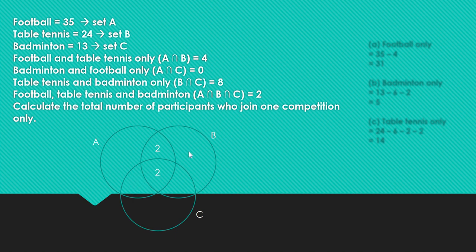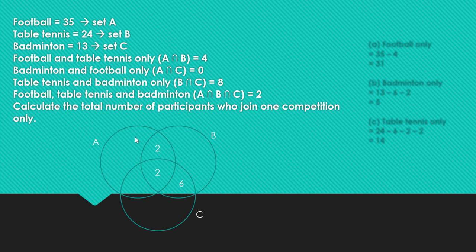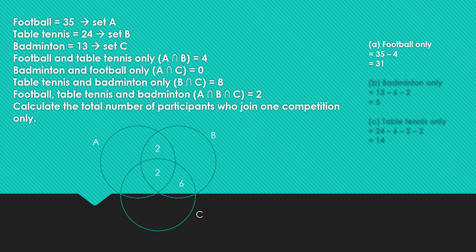For table tennis and badminton only, set B intersect C, we have 8 participants. So 8 minus 2 gives us 6 remaining in that region. The question asks us to find participants who joined one competition only, meaning we look for the non-intersection area — outside all the overlapping regions. For football, set A, the total is 35. We deduct 2 plus 2, which is 4. Therefore, football only is 35 minus 4, which equals 31.